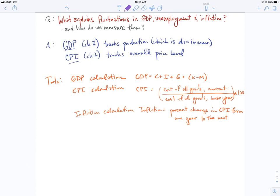We're looking to knit together what's going on in this introduction to macroeconomics section. I've arranged it in a series of questions, answers, and tools. The first question, the overarching question, is what explains the fluctuations in GDP, unemployment, and inflation, and how do we measure them? Chapter 7 gets into this measurement: GDP and CPI, tracking production and overall price level.